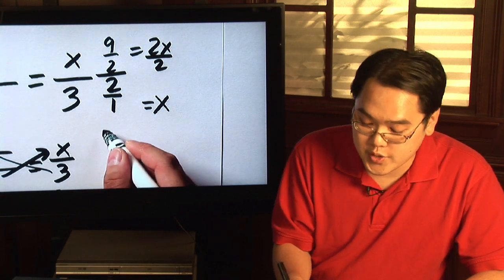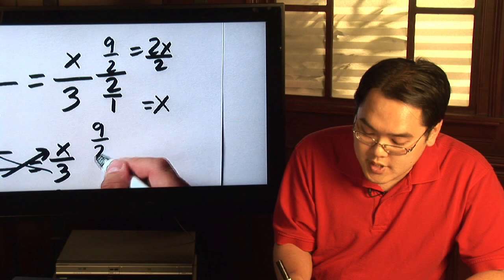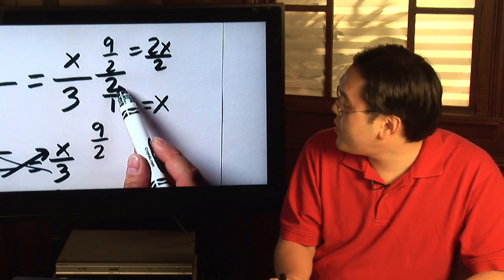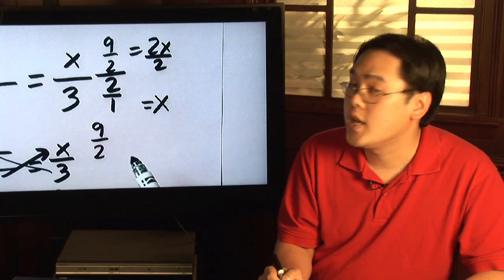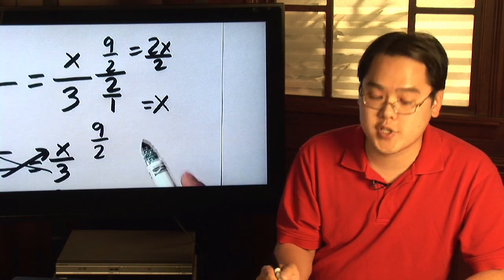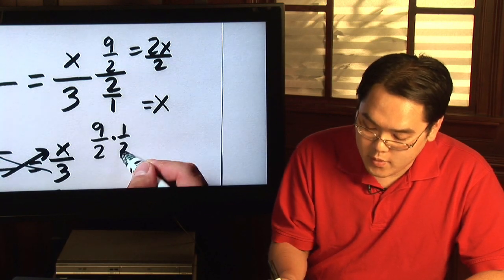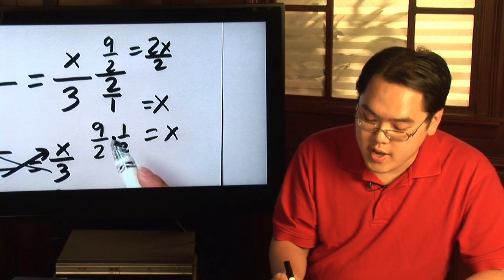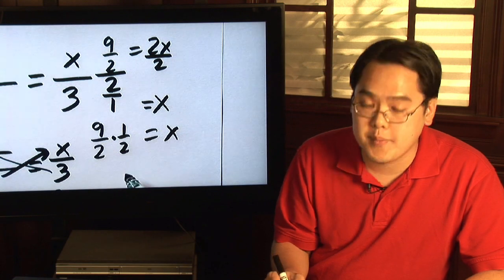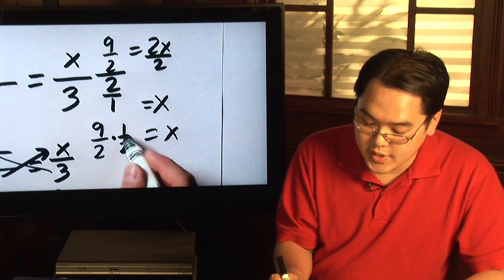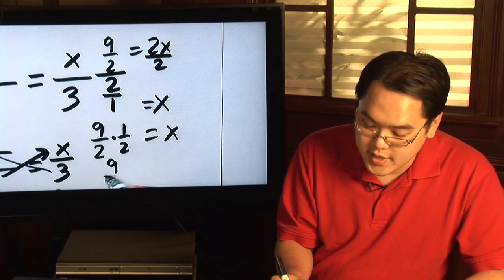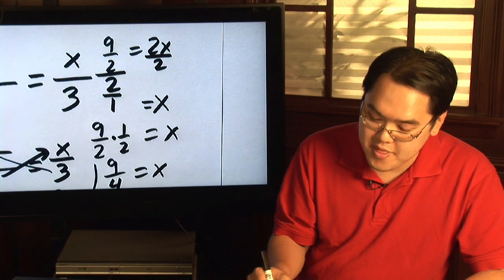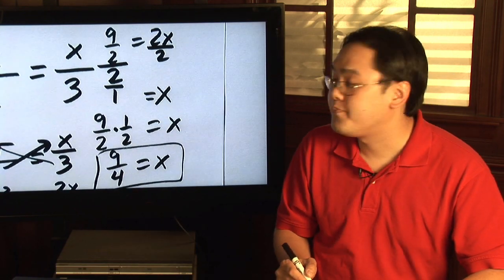So as a result, you'll have nine halves, and remember from arithmetic rules: if you're dividing by two over one, then you have to multiply by the reciprocal, one half. So x is equal to nine halves times one half, and you will get nine over four equals x — and that is your final answer.